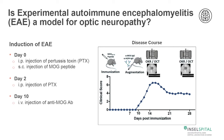The timed disease course is as follows: we give a subcutaneous injection of the MOG peptide and the injection of pertussis toxin, which is repeated on day 2. In our augmented model version, on day 10, we give an IV injection of anti-MOG antibodies.